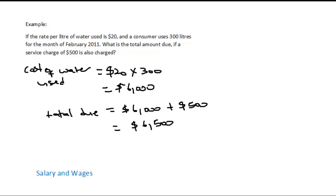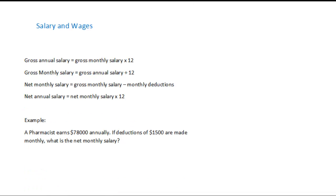Let's look at the next topic, which is salary and wages. A salary is a fixed monthly income that workers receive. The gross monthly salary is the salary that a person receives before any deduction is made — like income tax or education tax and whatever deductions they make.